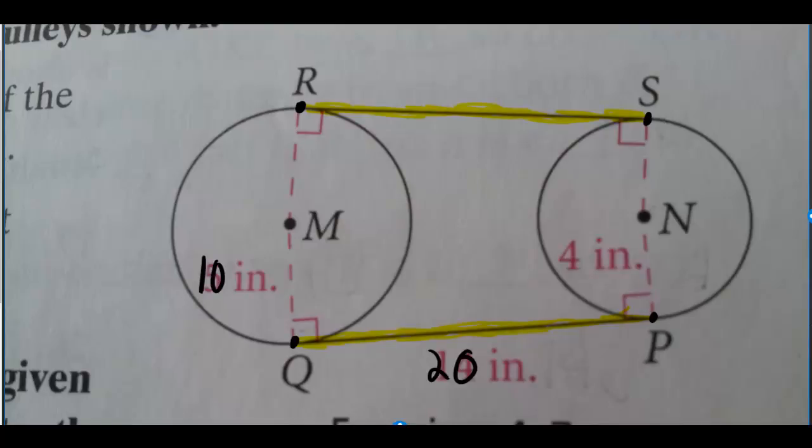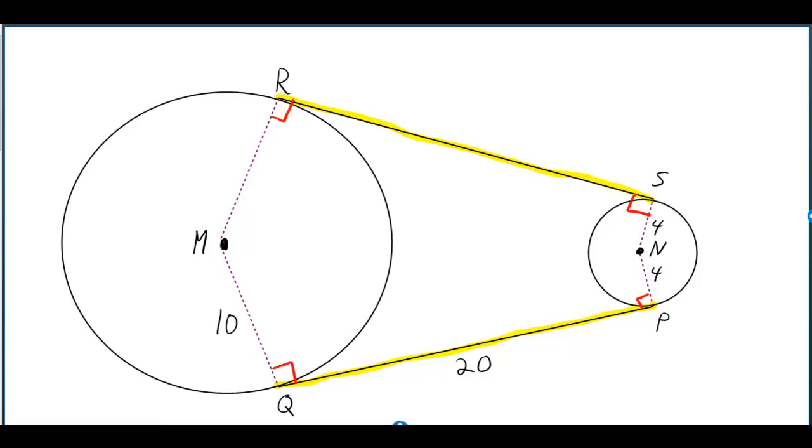We were asked to give a convincing argument why RS is equal to QP, but this picture sucks, so we'll use this one.